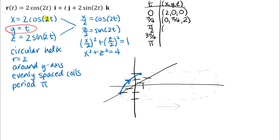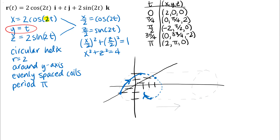Plotting a couple more points: at t = pi/2, it's halfway through the cycle, so x = -2, y = pi/2, z = 0 — I plot that on the back and draw that part of the curve dashed since it's going behind. I could plot more points for a better graph. This curve continues, so I can just sketch copies of the same helix if I want to show more cycles.